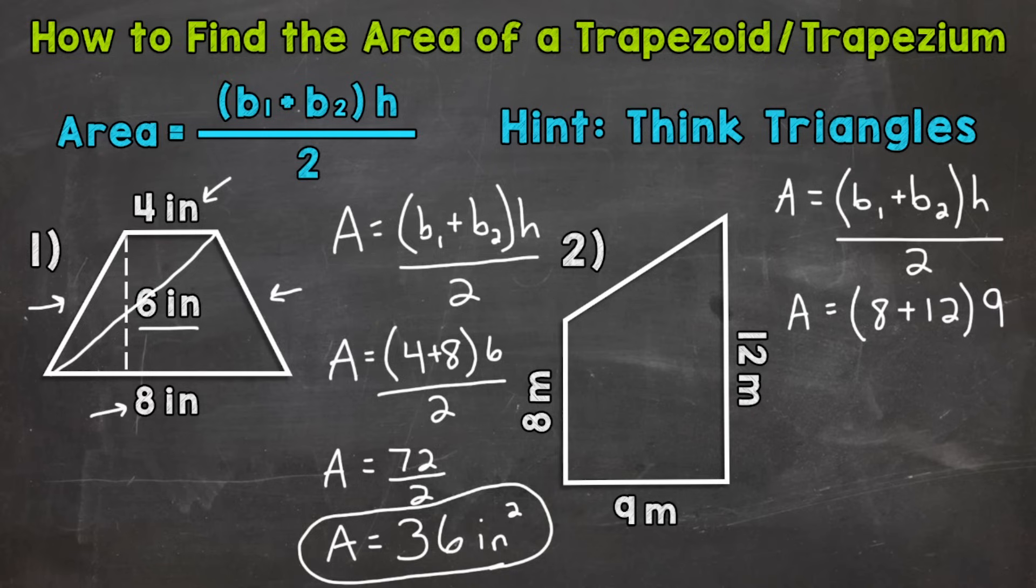In this problem, we'll use the measurement of one of the legs. In number one, we didn't need any of the measurements for the legs. But number two, one of those legs gave us the height. So we used it and we divide that by two. So we know that eight plus 12 is 20 times nine is 180. And we divide that by two to get our final area.